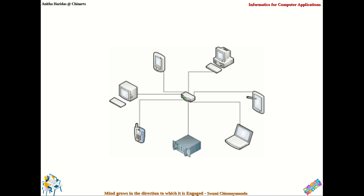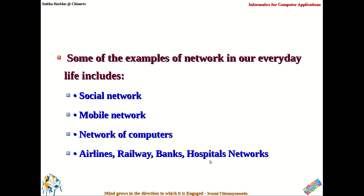In this diagram, all these are various devices — you could see laptops, desktops, server machines, mobile phones, tabs — all these are connected together in a network, which you call a computer network. These are some of the examples of network in our everyday life.